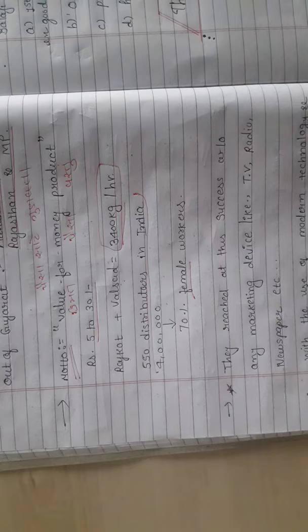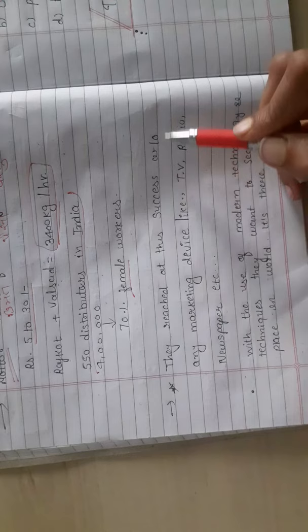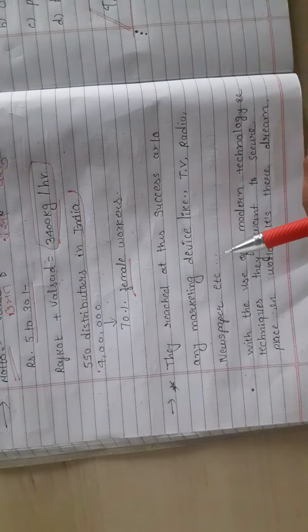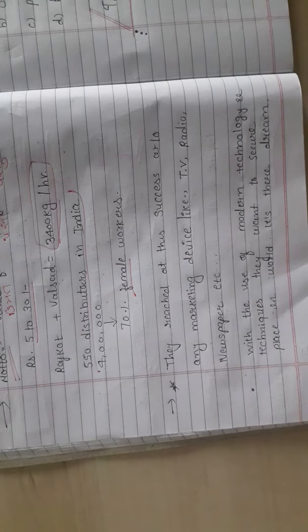Balaji's namkeen is famous in Maharashtra, Goa, Rajasthan, MP, and Madhya Pradesh. The company earns a lot from these states. They pay tax, and we should value this. This is about Gujarati earning money.